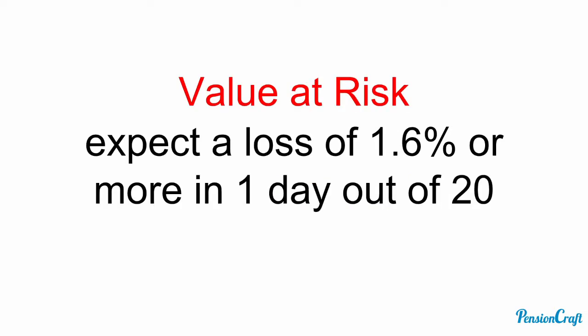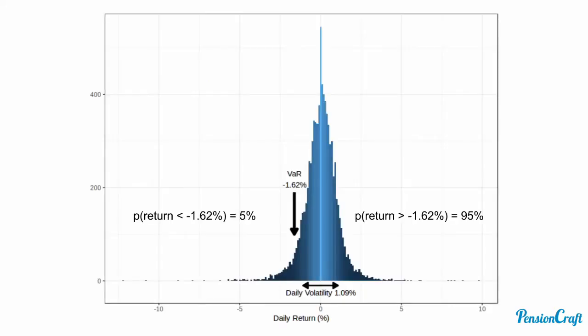If we do want to focus on tail risk, a common measure is value at risk. For example, we might expect a loss of 1.6% or more in one day out of 20. Going back to our return distribution, that means a loss of minus 1.6% or more occurs with a 5% probability, and 95% of the time the return will be more than minus 1.6%. So in other words, it's the amount of probability in the tail — or the weight of the tail.